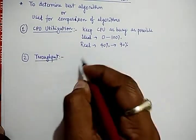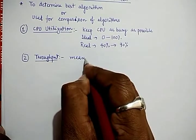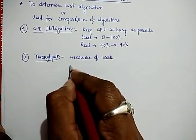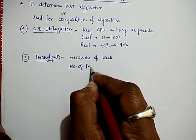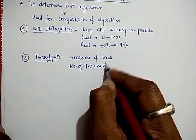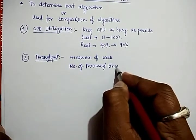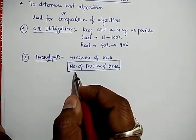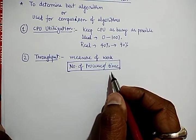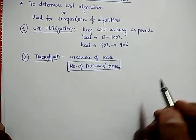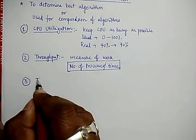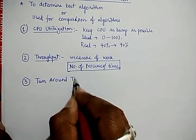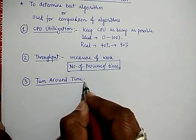The second criteria is called throughput. As discussed earlier, throughput is a measure of work, simply calculated as the number of processes executed per unit of time. The algorithm that executes more number of processes per unit of time is considered to be the good algorithm as compared to others.